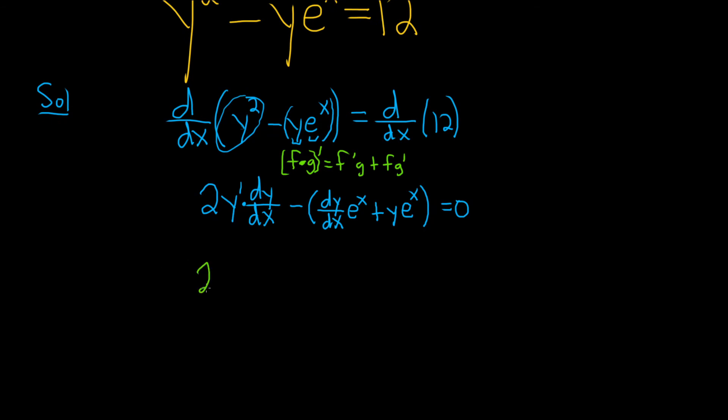All right. So this is going to be 2y dy/dx minus e to the x dy/dx minus y e to the x. And that's equal to 0.